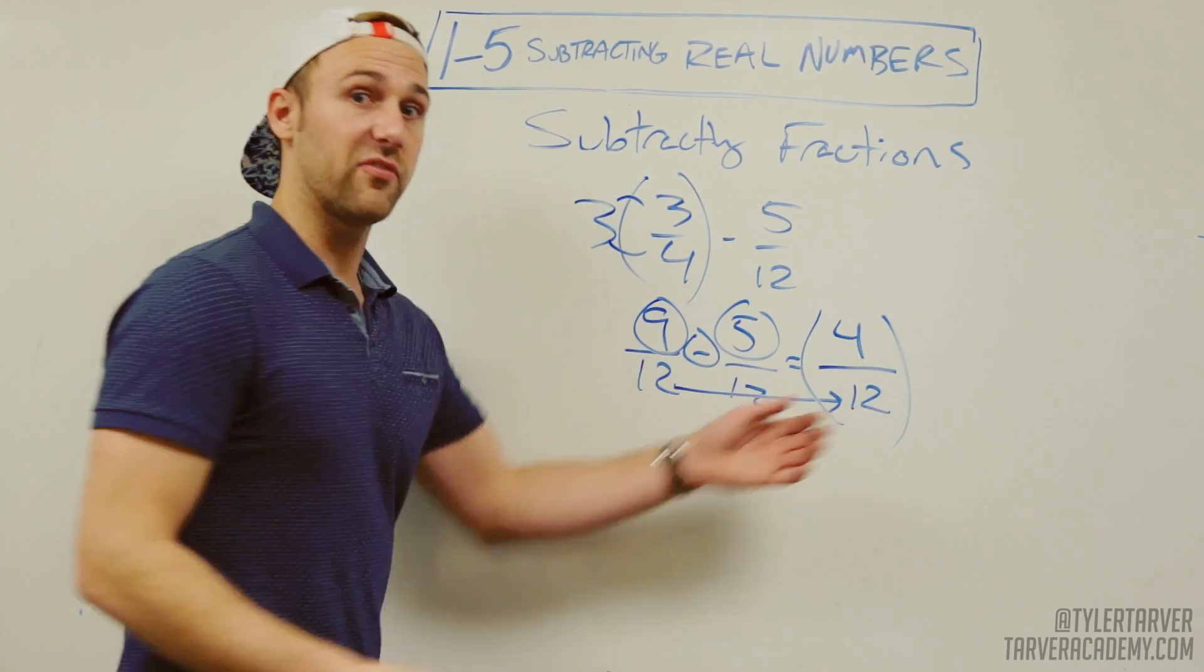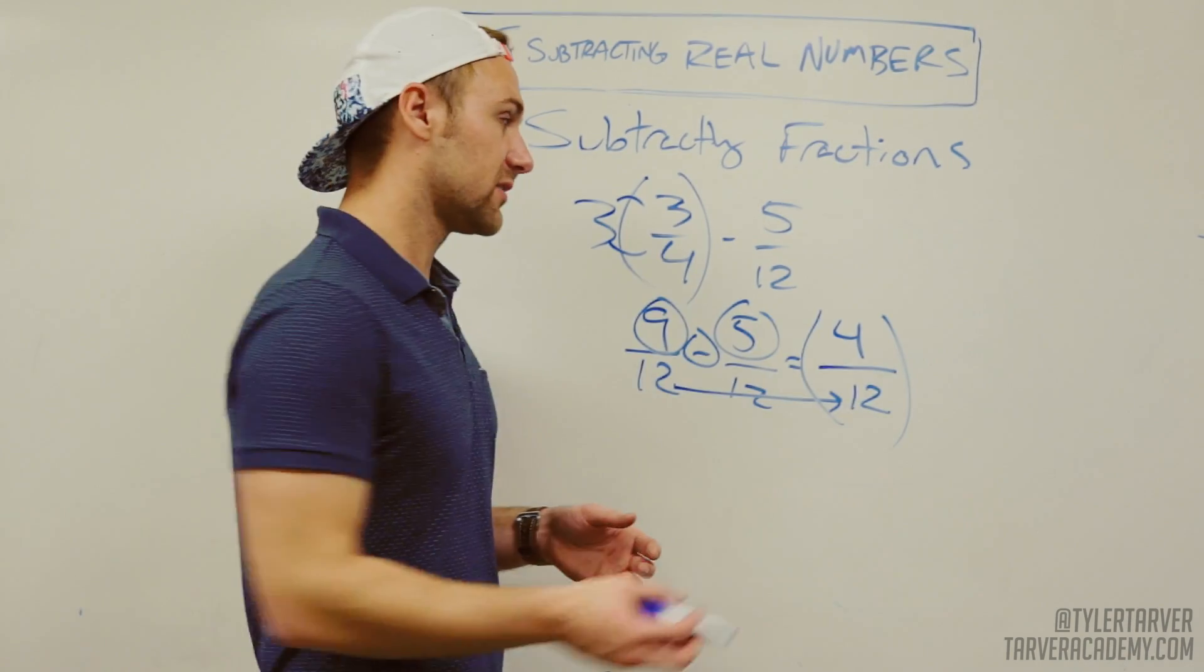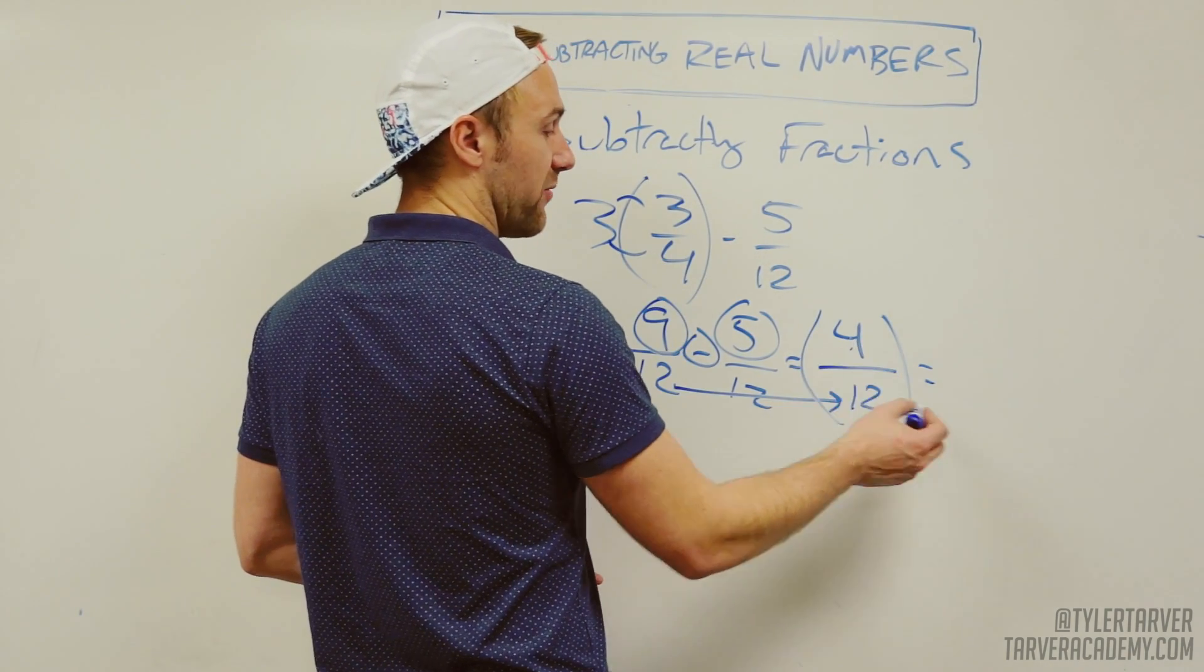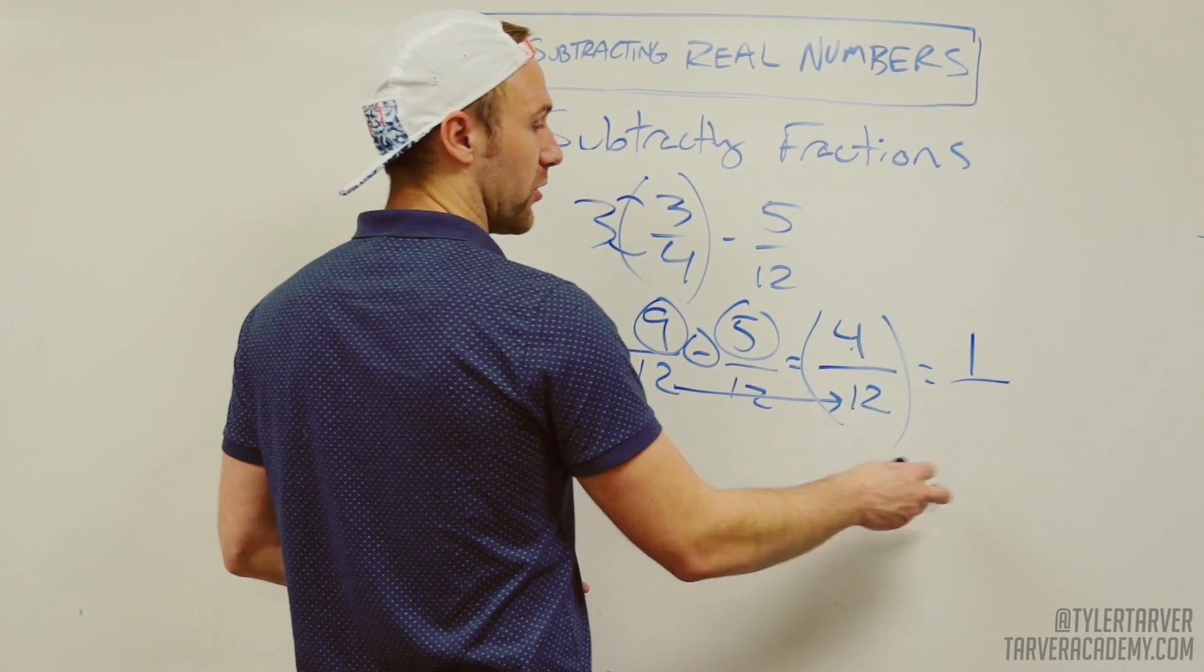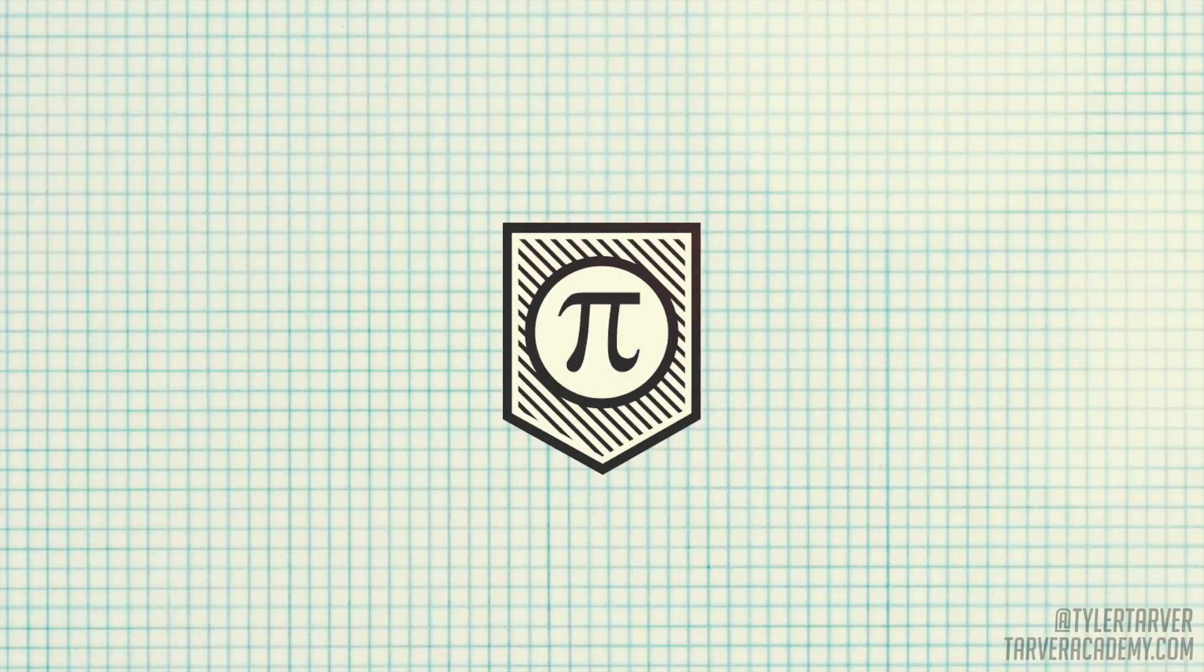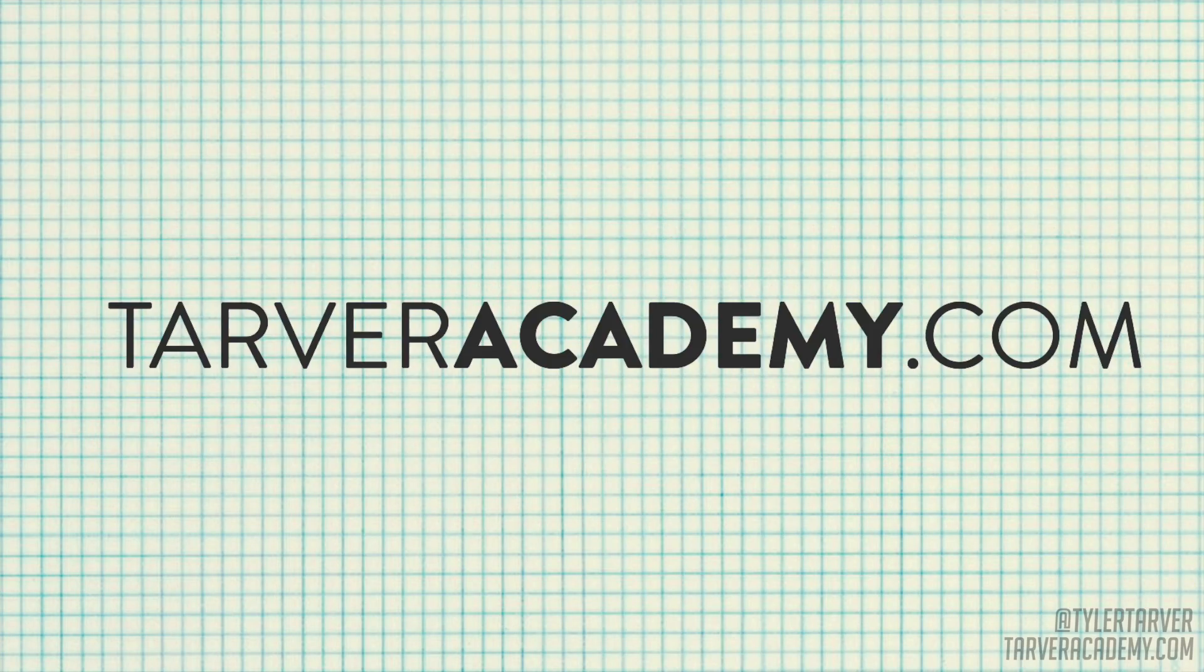Now, can we simplify 4 over 12? Yes. What goes into both of these? 4. How many times does 4 go into 4? One time. How many times does 4 go into 12? Three times. You just subtracted fractions, my friends.